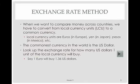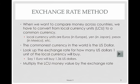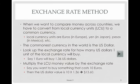Say one euro will buy $1.36 in US dollars. Then you multiply the local currency unit money value by the exchange rate. So if you want to buy something that costs 10 euros, you need $1.36 for every euro — multiply $1.36 times 10 — and you'll need $13.60 to buy something that costs 10 euros in Europe.